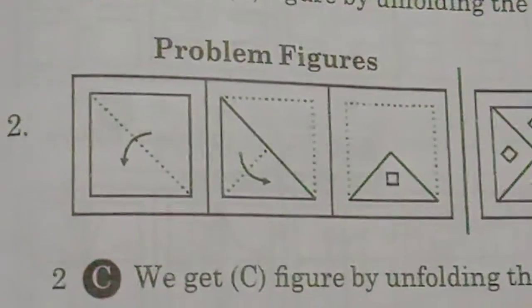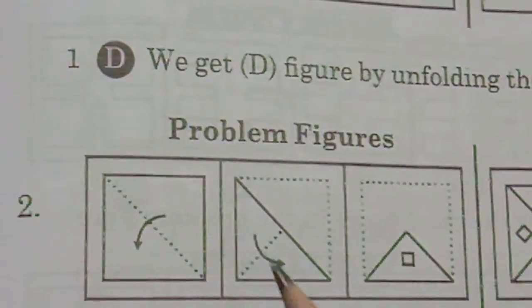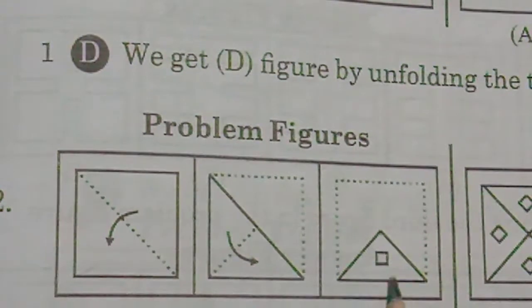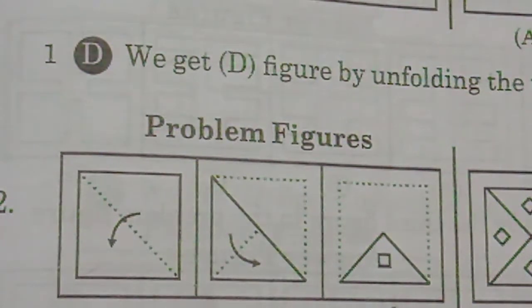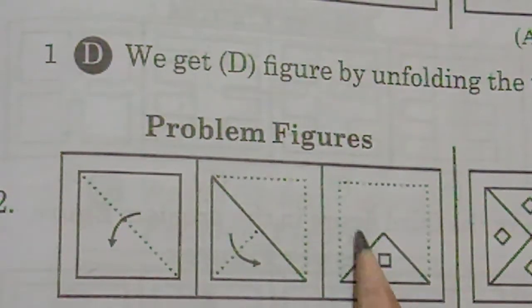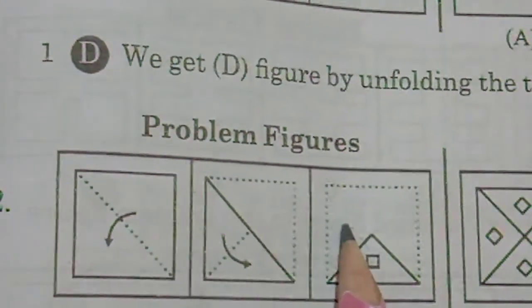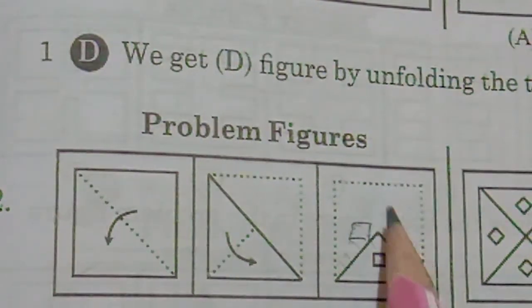Let's see one more example. You can see here — this is the first folding and the second folding. After that, after folding, there is one small square. If you cut the square, what will be the answer? If it is folded here, we have to take it as a mirror image — the square will come here.